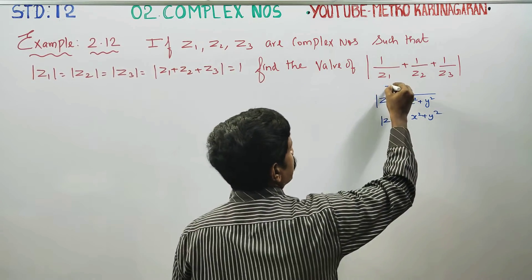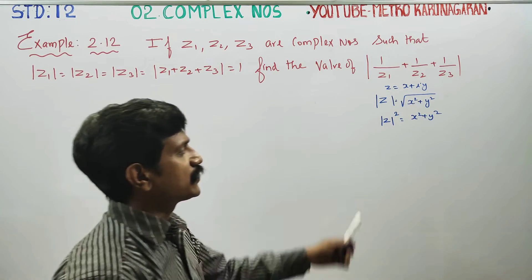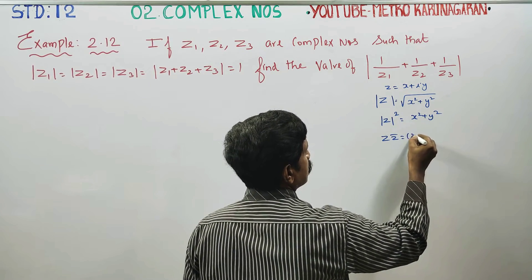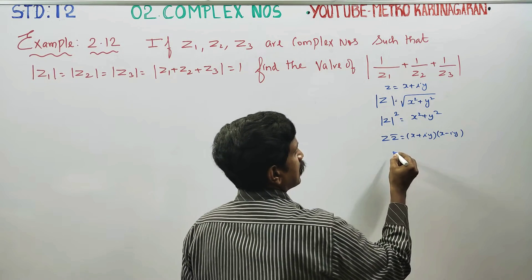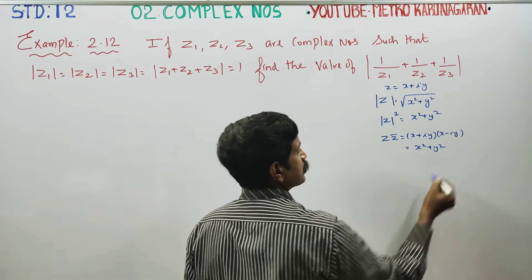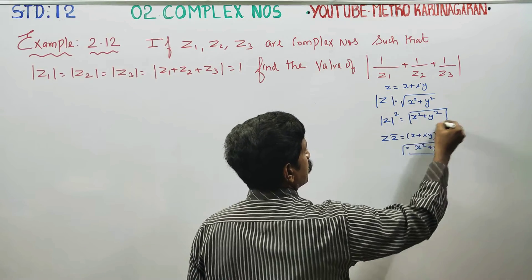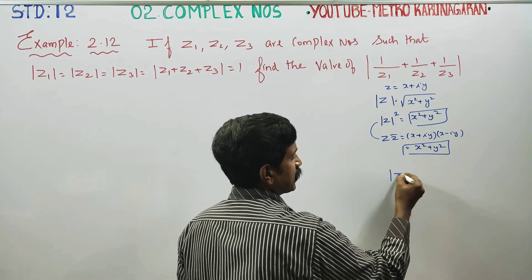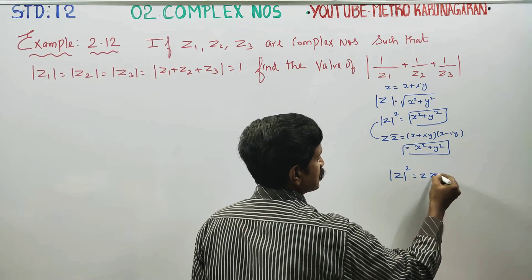Z is equal to x plus iy. This is the modulus of Z squared. What is Z into Z-conjugate? Z is x plus iy and Z-conjugate is x minus iy. The modulus of Z squared equals x squared plus y squared. Important property derived: modulus of Z squared equals Z into Z-conjugate.